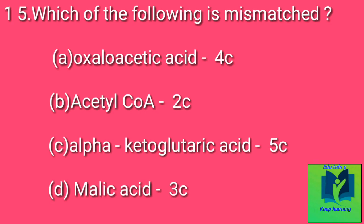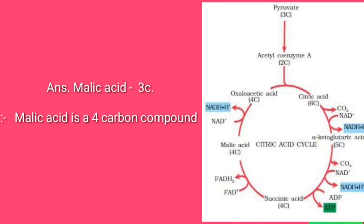Which of the following is mismatched? Option A: Oxaloacetic acid – 4-carbon compound. Option B: Acetyl coenzyme A – 2-carbon compound. Option C: Alpha-ketoglutaric acid – 5-carbon compound. Option D: Malic acid – 3-carbon compound. Answer: Malic acid is mismatched because Malic acid is a 4-carbon compound.